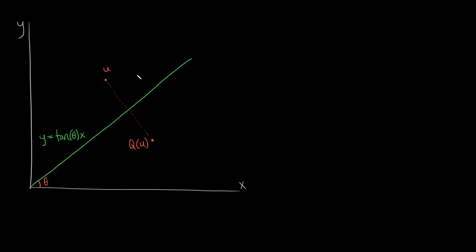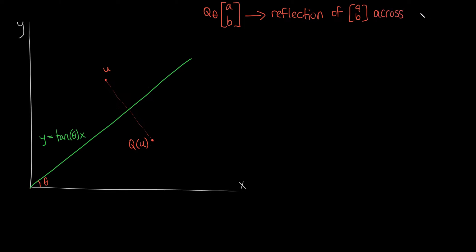I have a problem that asks us to find a matrix Q(θ) such that when you multiply a pair of coordinates a and b, it gives you the reflection of those coordinates across the line y equals the tangent of theta times x. I have a graph here that shows this — if we have a point u and we apply Q(θ), it should give us the reflection across this green line, which is y equals tan(θ)·x.